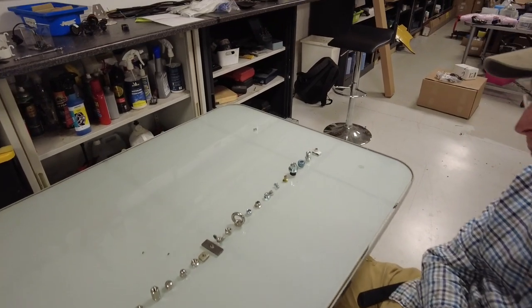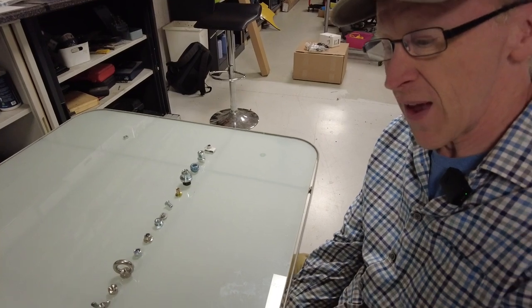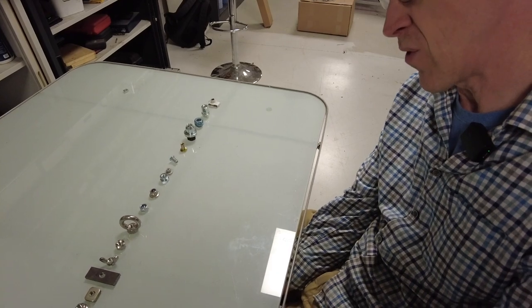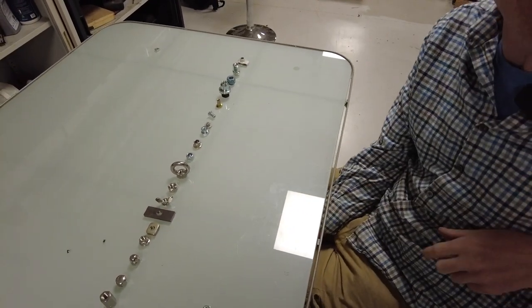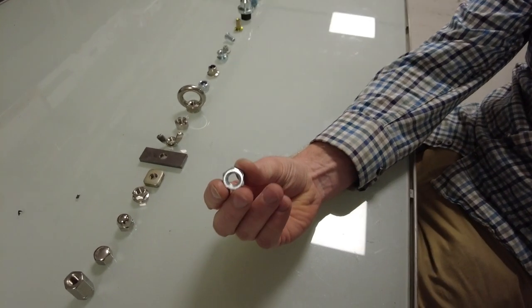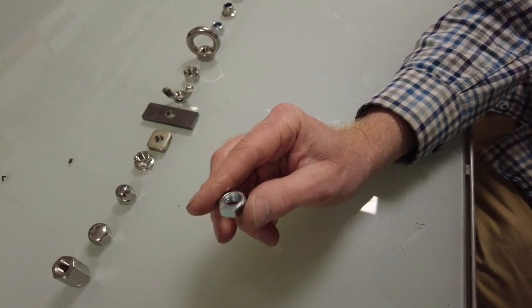This isn't going to be the total in-depth because there's various things - different threads, imperial, metric, different materials - this really is about different sorts of shapes of nuts, different types. We'll start with the common garden nut. That is a nut we'll use, they're cheap and they do the job. You thread that on and it's good.